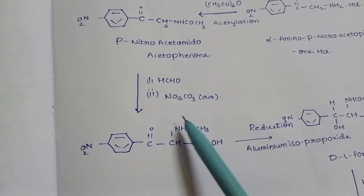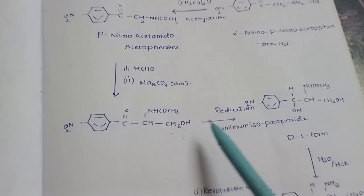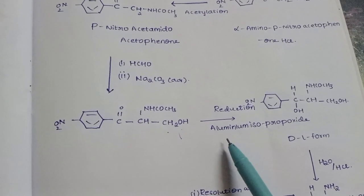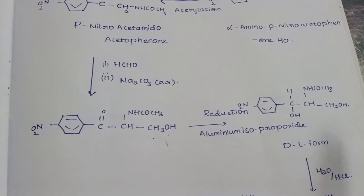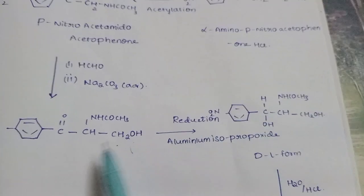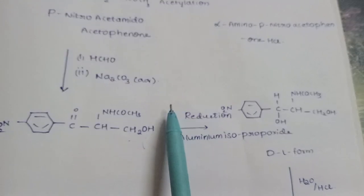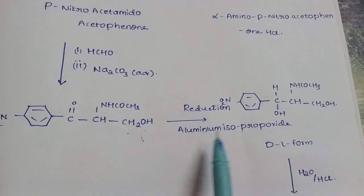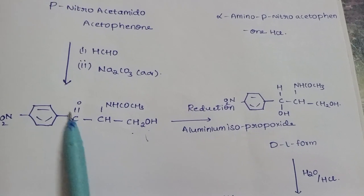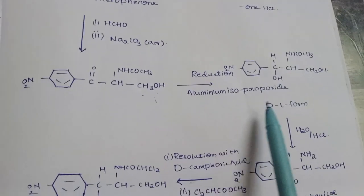Then we do reduction in the presence of aluminum isopropoxide. This reduces the ketone form to the presence of OH, converting it to CH2OH. This forms the DL form.